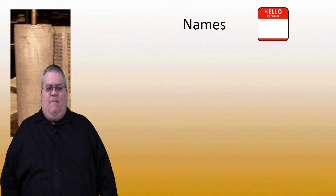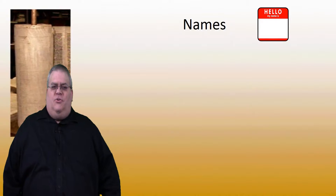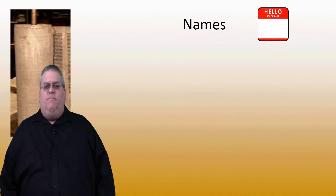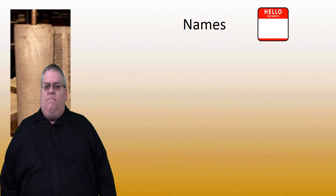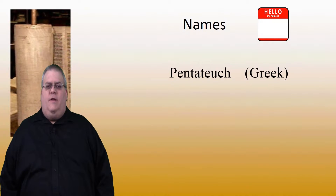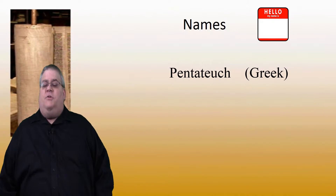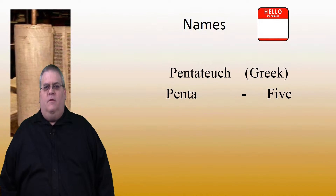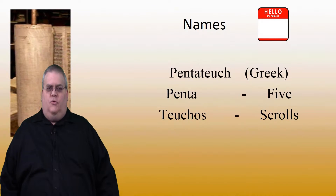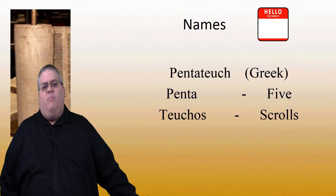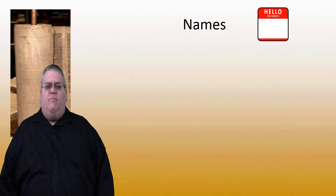First, a word about that name. In the last section, you learned that these books go by various names — sometimes called Torah, sometimes the Book of Moses, the Law, and the Pentateuch. The term Pentateuch is the Greek name for these books, and it's a combination of two Greek words. The word penta means five, as in pentagon or pentagram, and the word tukos means scroll. So the word Pentateuch means five scrolls, or five books — a logical name for these five books.